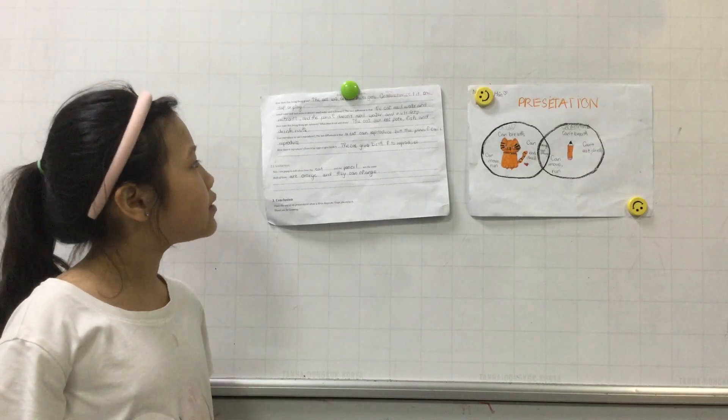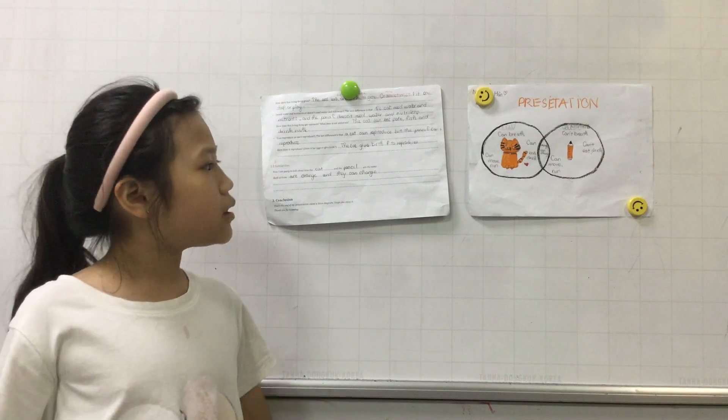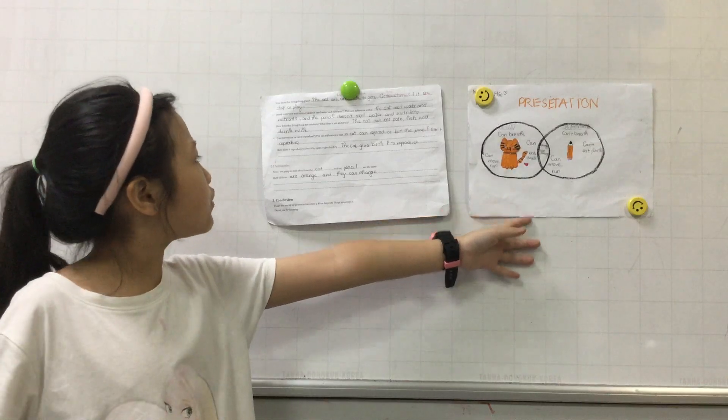The next difference is that the cat needs water and nutrients, but the pencil doesn't need water and nutrients.